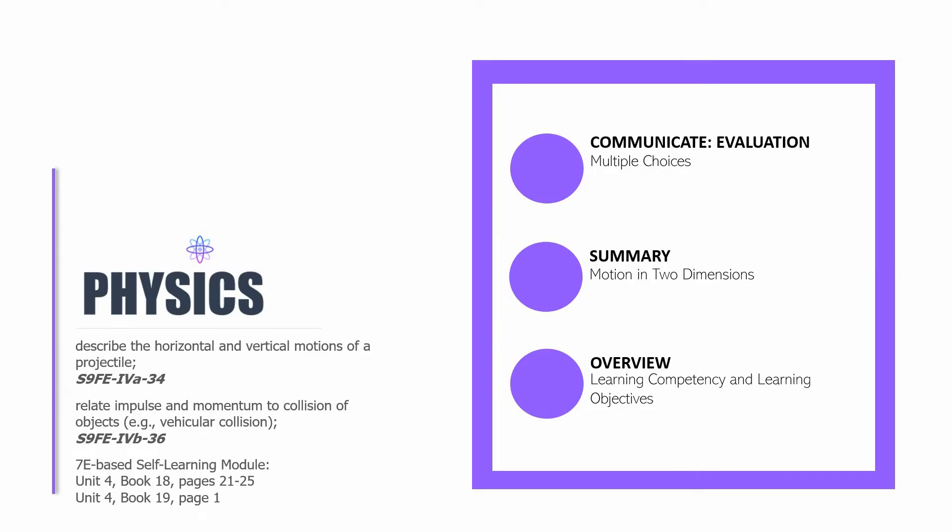Hello and welcome to the 6th episode in the Grade 9 Physics series of the Knowledge Catalogue. For this series, we are going to have two learning competencies as made obvious here in this part of the slide. The first learning competency is describe the horizontal and vertical motions of a projectile. This is familiar to you because this has been the learning competency that we have been working on in Grade 9 Physics.